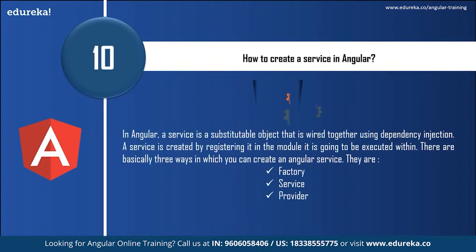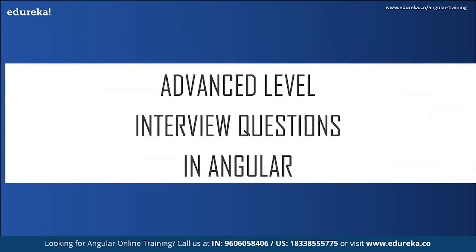How do you create a service in Angular? A service is a substitutable object that is wired together using dependency injection. A service is created by registering it in the module it is going to be executed within. There are basically three ways to create an Angular service: factory, service, and provider.